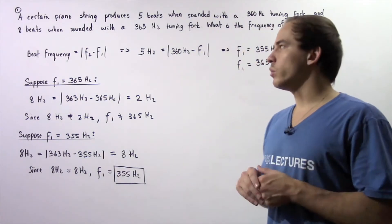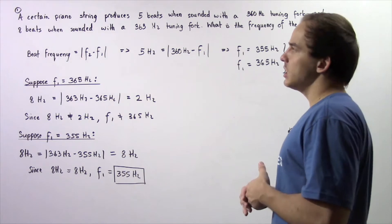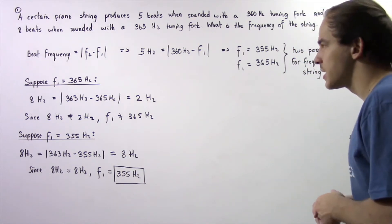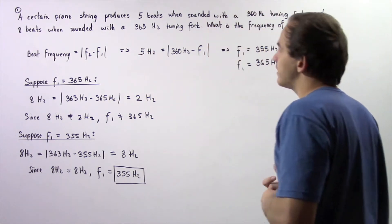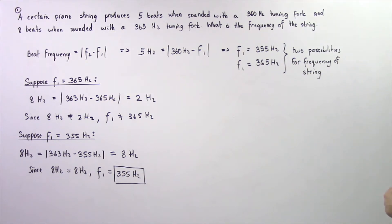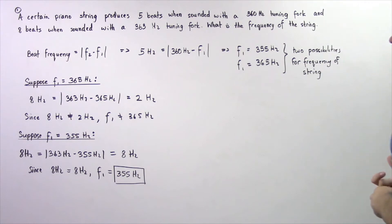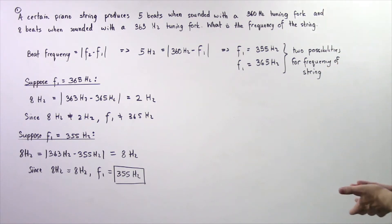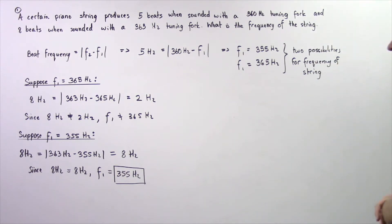Let's examine the following example that we'll deal with using the beat frequency to calculate what the frequency of a piano string is. Let's suppose a certain piano string produces 5 beats when sounded with a 360 hertz tuning fork and produces 8 beats when sounded with a 363 hertz tuning fork. Using this information, what is the frequency of the piano string?